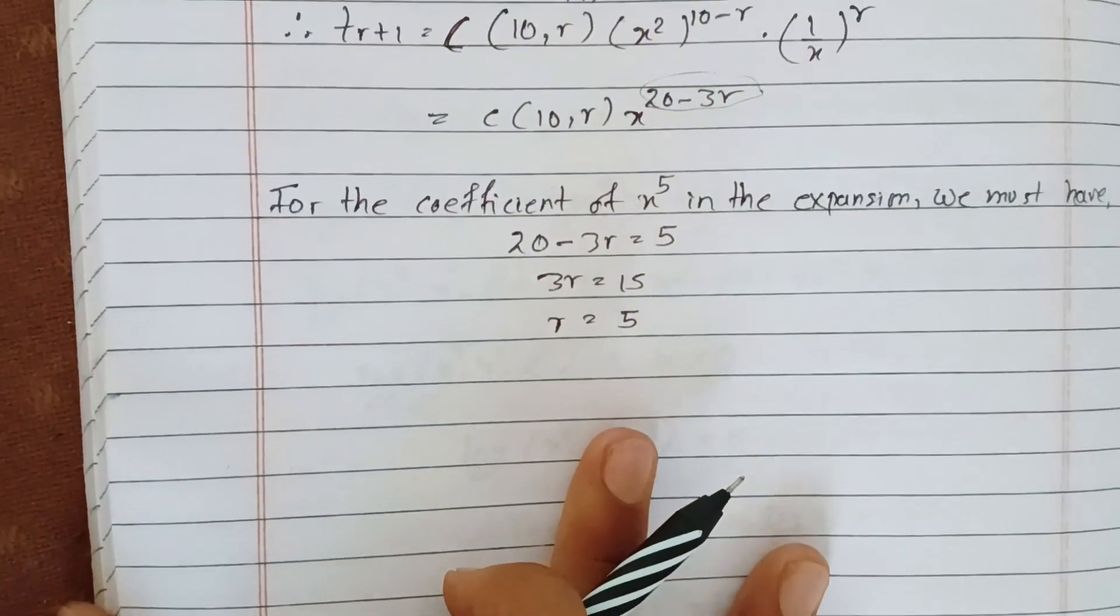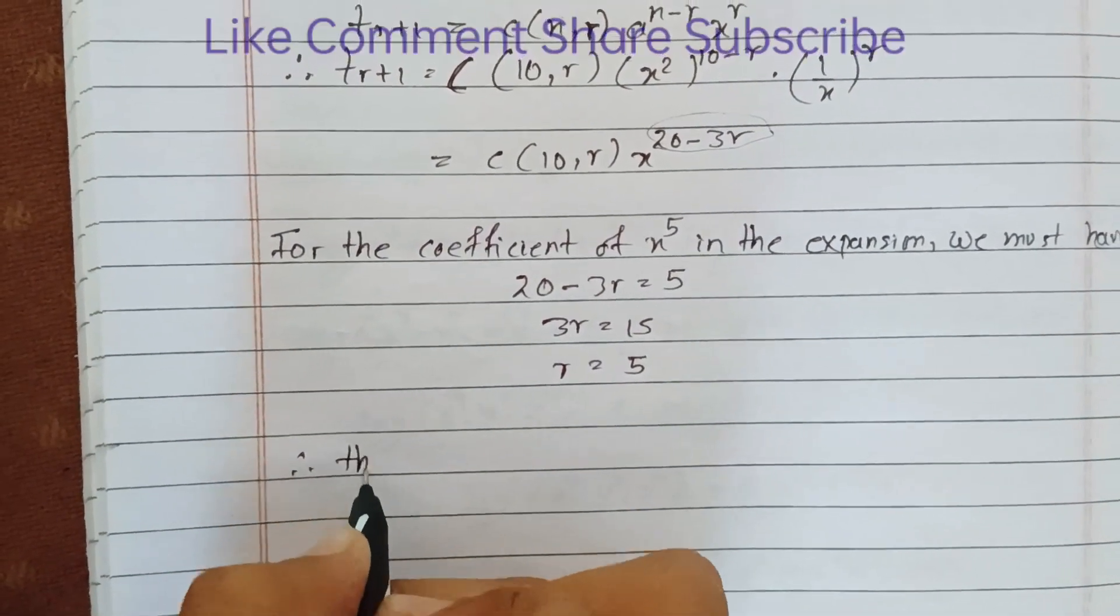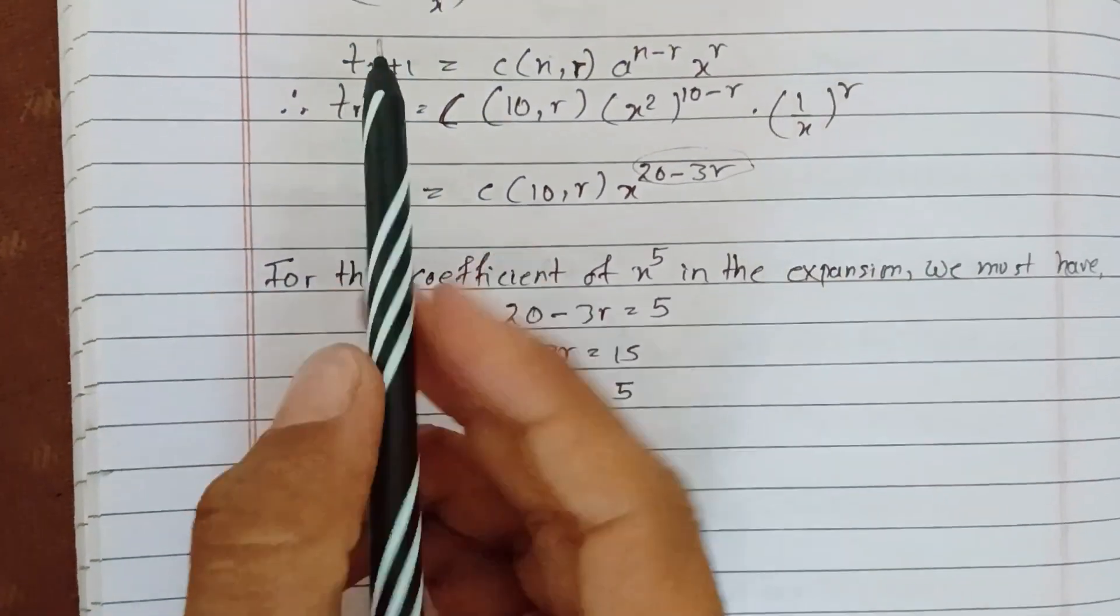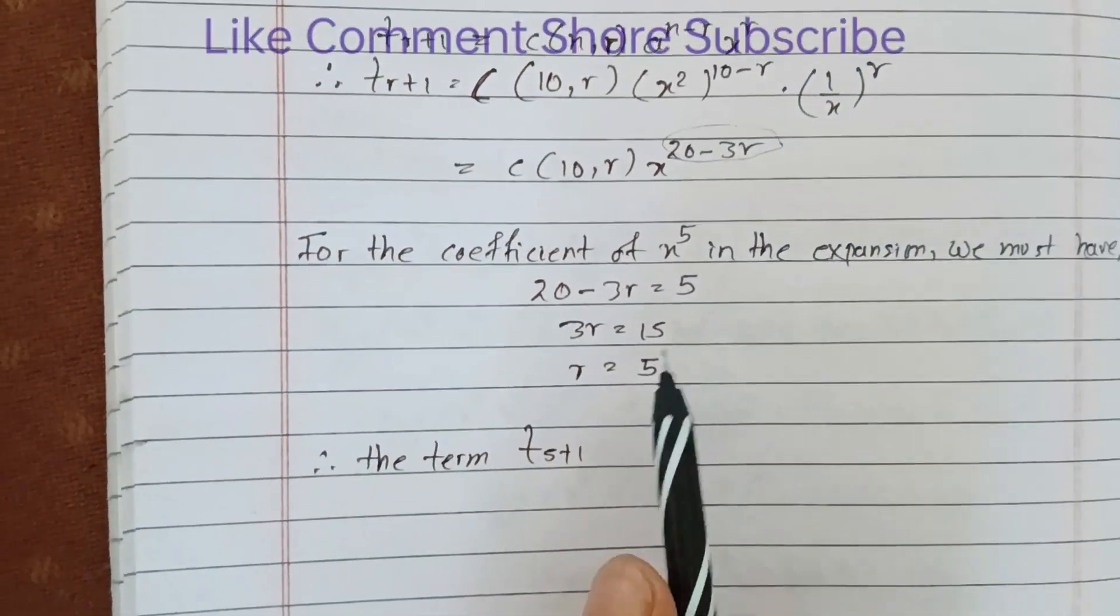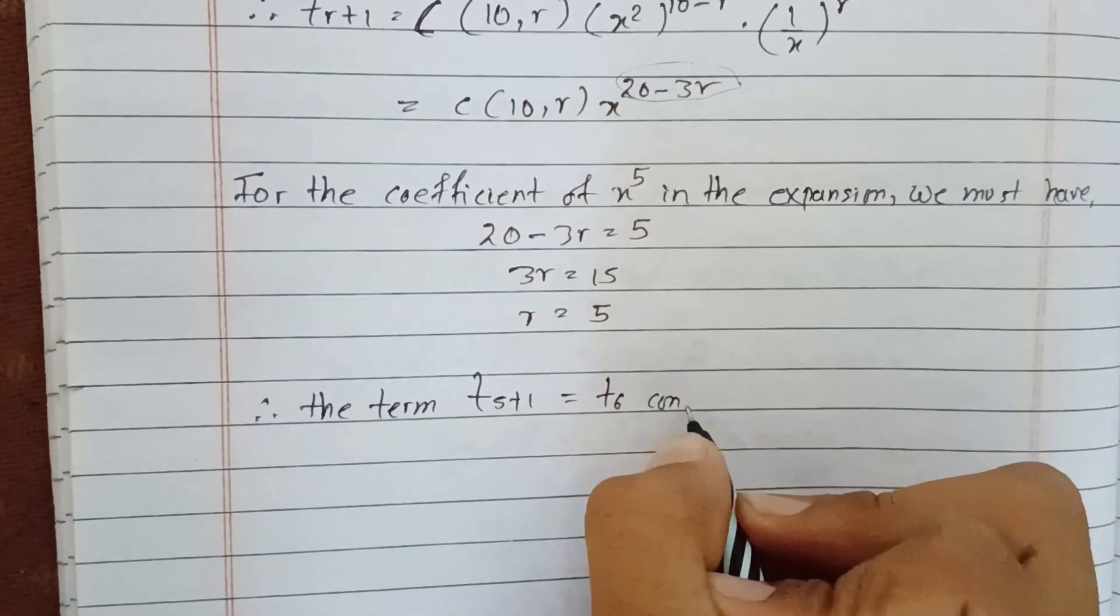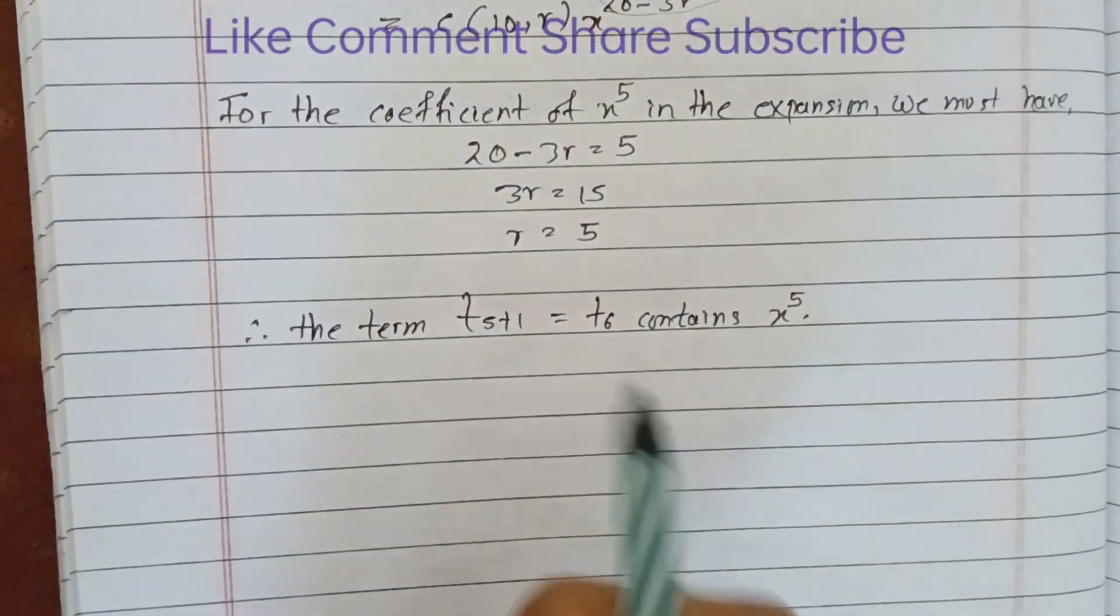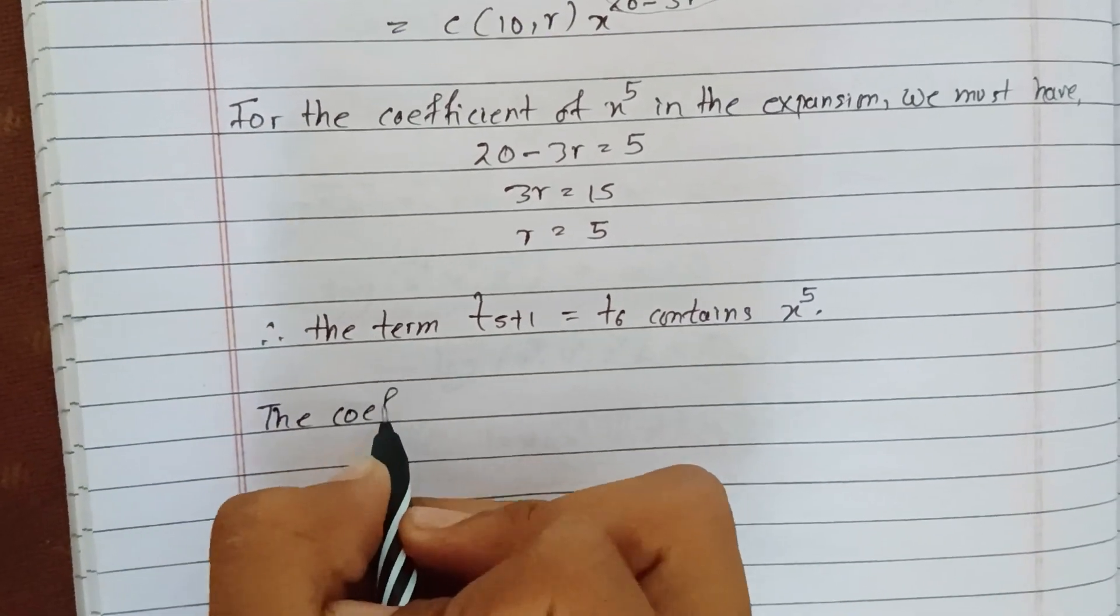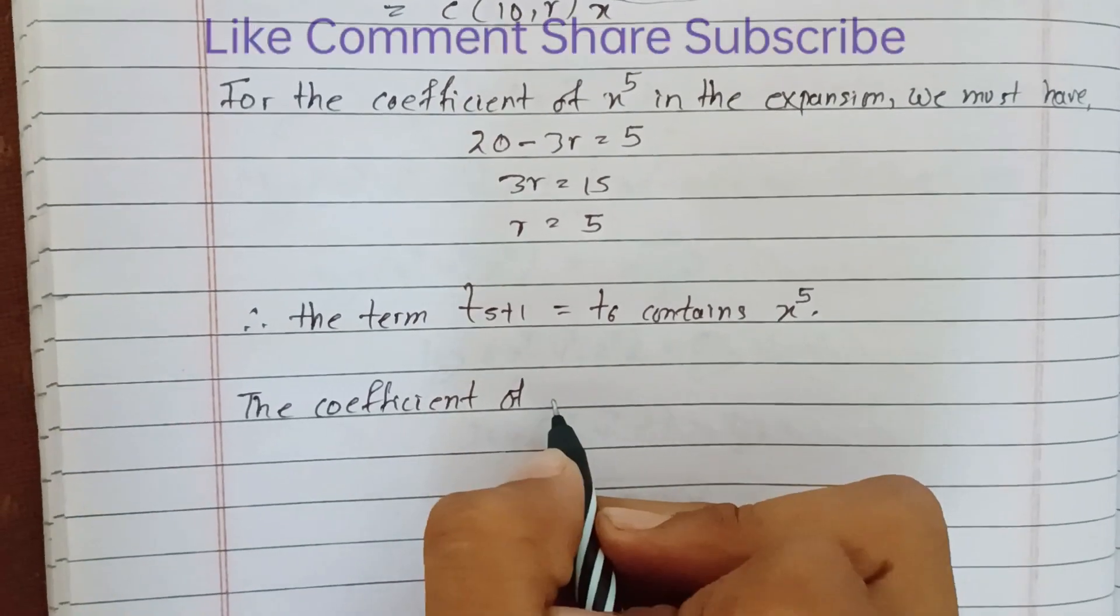Therefore, the term T_(5+1) = T_6 contains x^5.